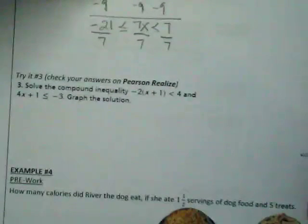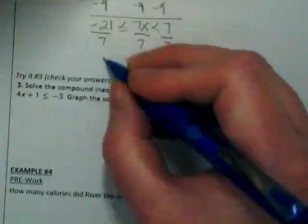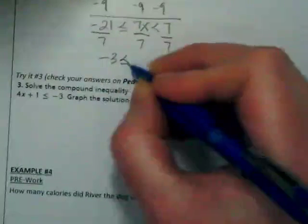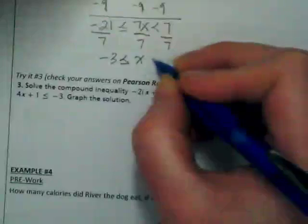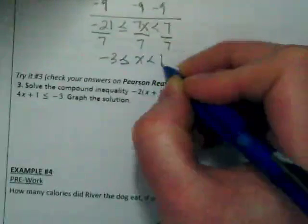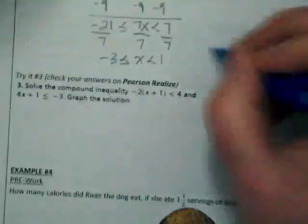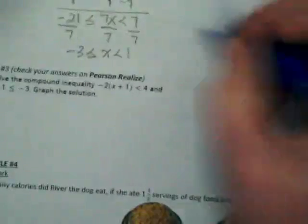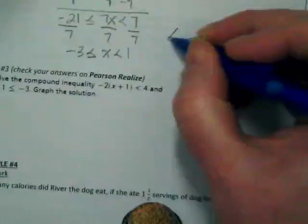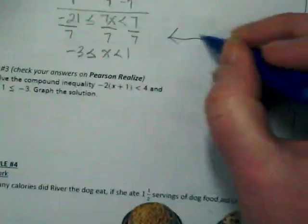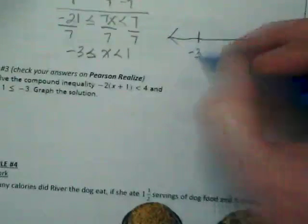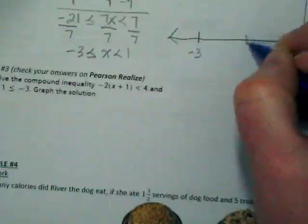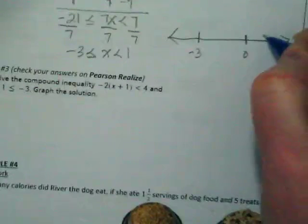They're all positive 7s, so no symbol flips. Negative 3 is less than or equal to x is less than 1. Let's show what that would look like on a graph then. We have negative 3 down here. 0 would be about here. And 1.